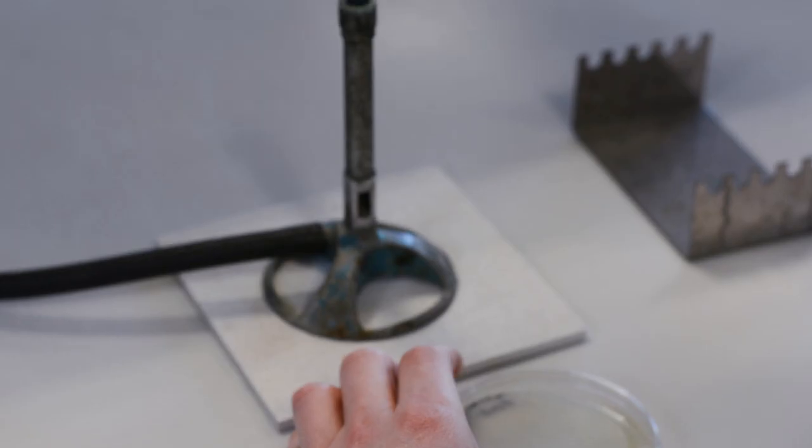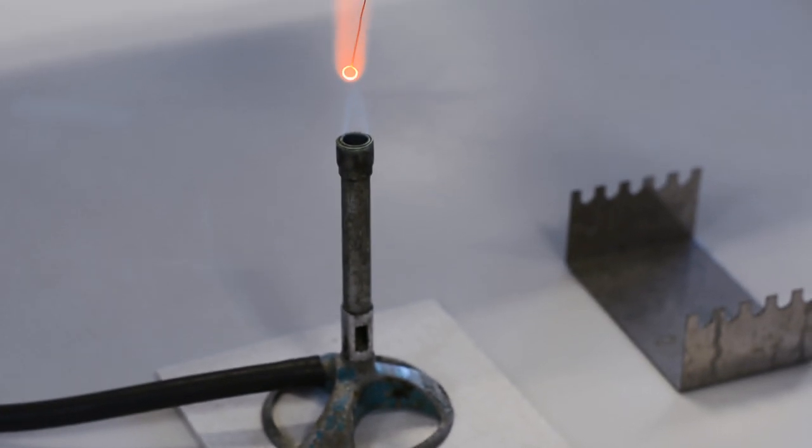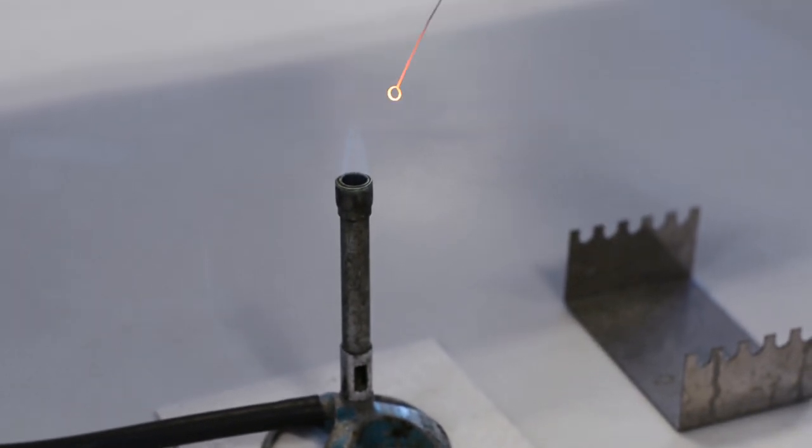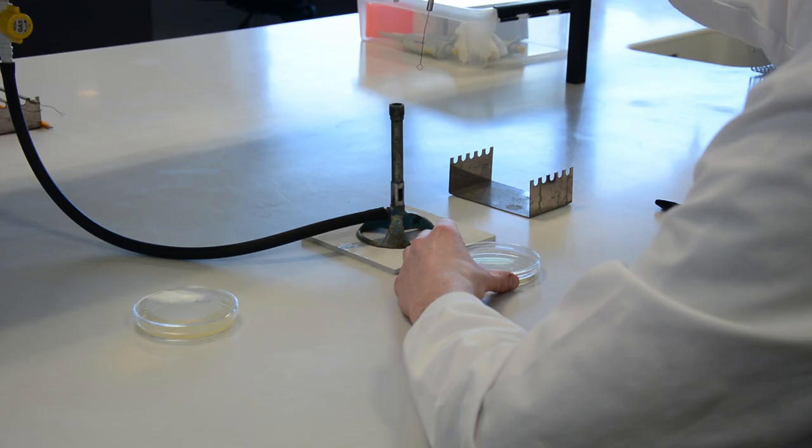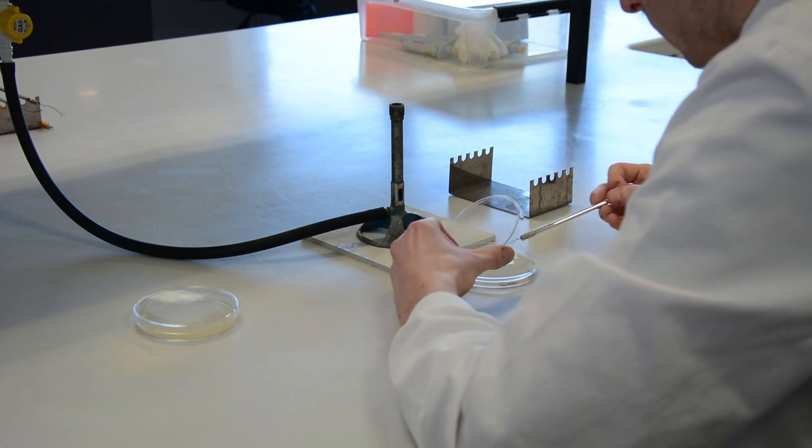The loop is sterilized again and used to move a further amount of culture across the plate, as shown in part 3 of the drawing. During this, care is taken not to overlap the original inoculum.